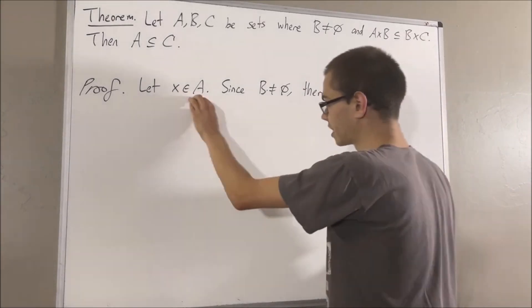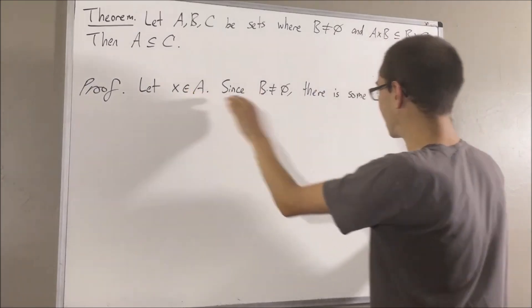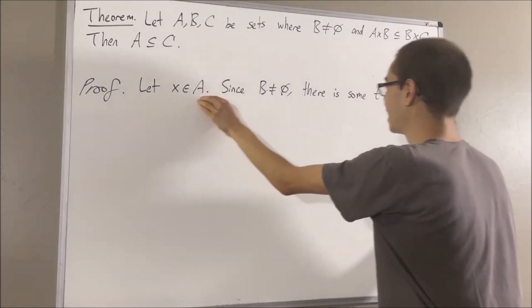So since X is an element of A and T is an element of B, this tells us that X, T is an element of A times B.